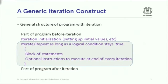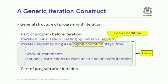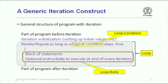Here is a quick recap. This is the generic iteration construct. In general, we have some part of the program before iteration and some part after. Depending on the construct, you could have some initialization parts and then the actual repetition construct where you look at a logical condition — the loop condition — which determines how long you loop around. The loop body is the part that you keep executing every time you iterate.